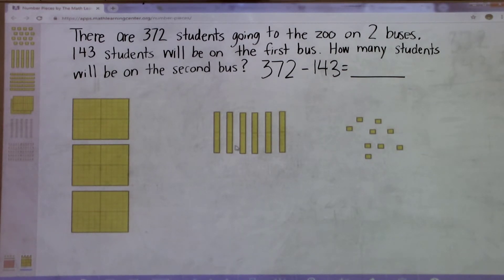Then I move into the tens place. I need to take away four tens. I only have six tens because I moved one of the tens into the ones place.